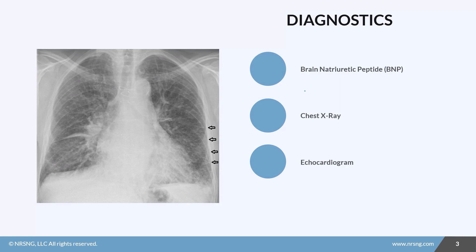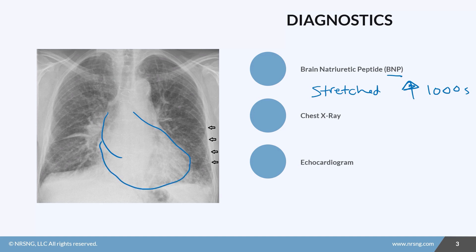There are multiple ways to diagnose and classify heart failure. The lab value we use is called brain natriuretic peptide, or BNP, and it is released whenever the ventricles are stretched. In congestive heart failure, with severe volume overload, this number can jump super high — up into the thousands. A chest x-ray may show that the heart is actually enlarged because of the overload and stretch in the ventricles.